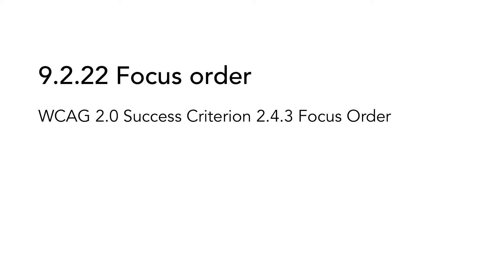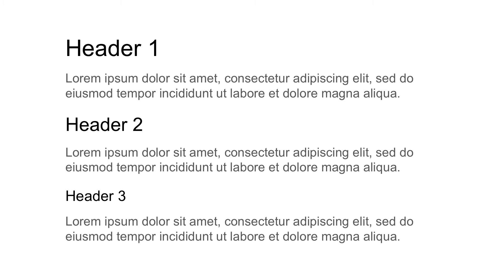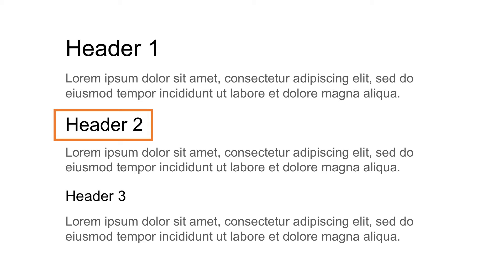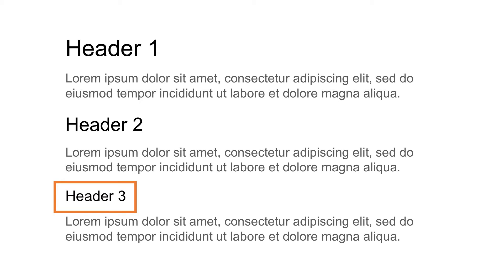9.2.22 Focus Order is based on WCAG 2.0 Success Criterion 2.4.3 Focus Order. When navigating from one object to another on a web page, the order has to be logical and make sense to the user, even if navigation is made with a keyboard. The order does not have to be the same order as objects occur in the code, but it has to reflect the logical meaning of the content. Keep in mind that the focus order affects both sighted keyboard users and blind users, so the focus order must make sense to both of these groups.